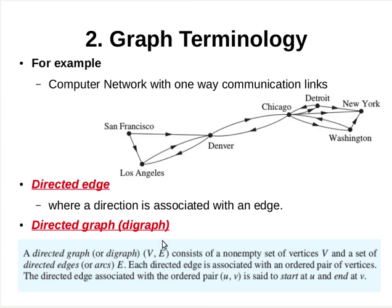Now we shall formally define a directed graph. A directed graph, or digraph, consists of a non-empty set of vertices and a set of directed edges. Each directed edge is associated with an ordered pair of vertices. In short, problems in almost every conceivable discipline can be solved using graph models.